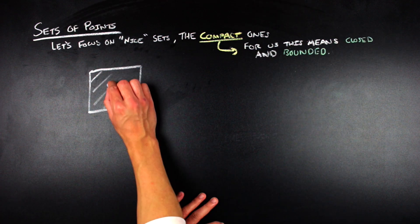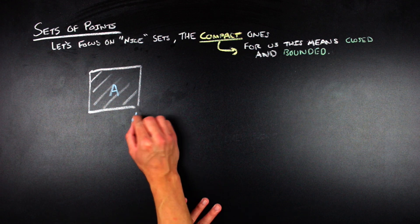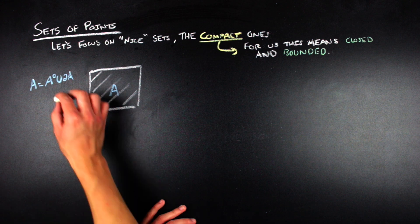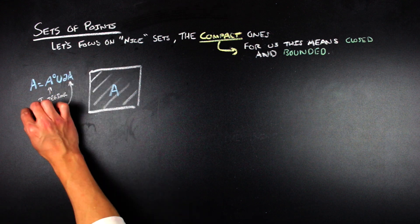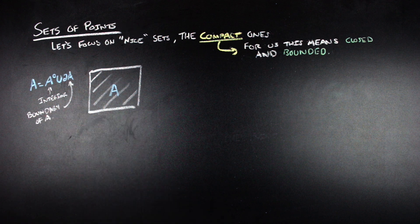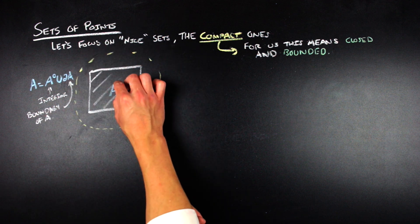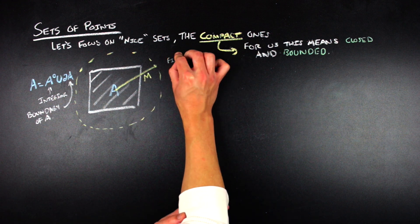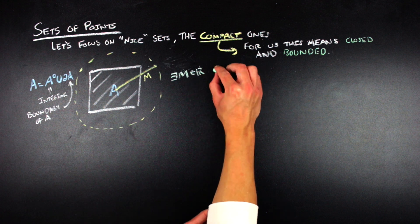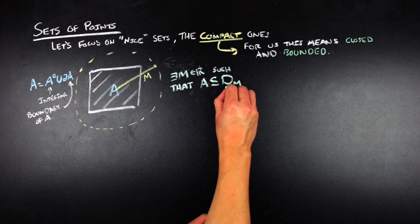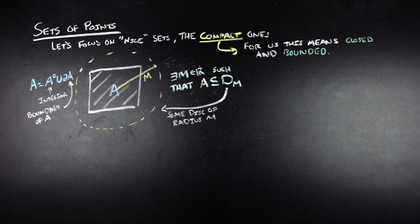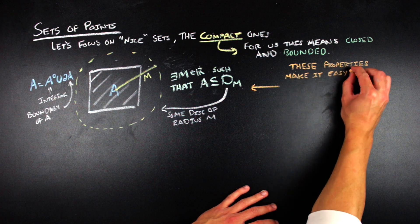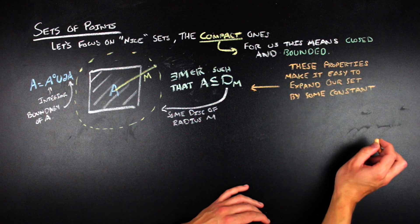In order to make sure things stay nice, we're going to go ahead and focus on particular types of sets, the compact ones, which for us just mean that the set is closed and bounded. So the closed part of that just means that whatever set we take is going to be equal to the union of its interior and its boundary. So in other words, the set that we're interested in is going to have all of its boundary points as a part of the set. And then the bounded part of that is that there exists some real number, big M, such that we can put a disk of radius big M around our set and contain all of it within that disk of radius big M.